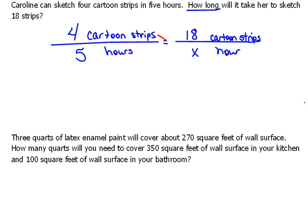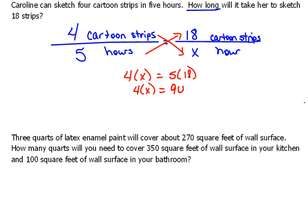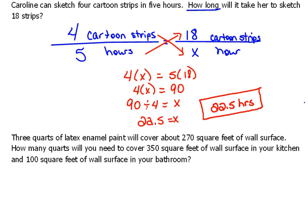Once we have this set up, we can use our cross product technique to solve it. We say four times x equals five times 18. Simplifying, that gives us four times x equals 90. Rather than asking what four times something gives 90, we go backwards using division: 90 divided by four equals 22.5. So it's going to take her 22.5 hours to sketch those 18 cartoon strips, keeping the same proportion as doing four strips in five hours.